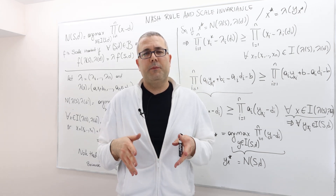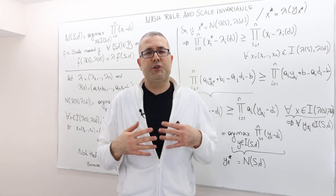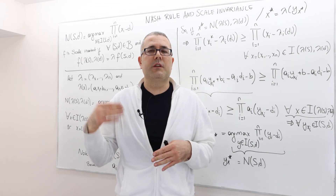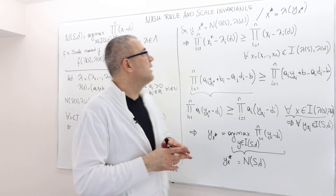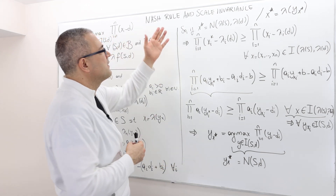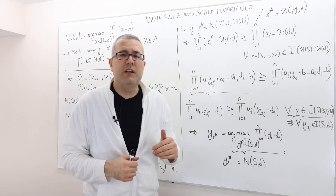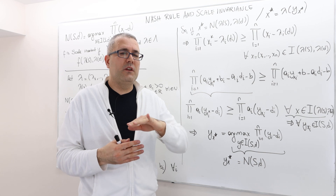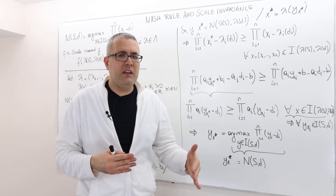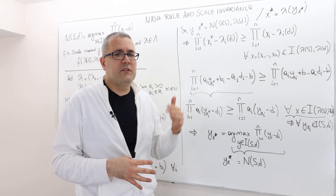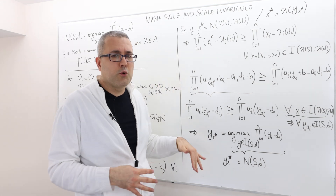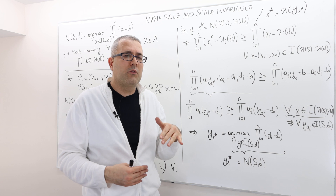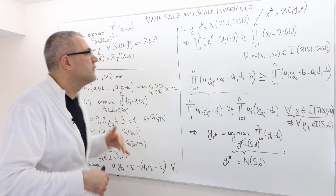Hello everyone. In this episode, I'm going to show that the Nash bargaining solution satisfies scale invariance. Because the proof is notation heavy, I decided to write it on the board, and now I will go through it slowly.